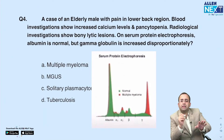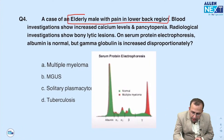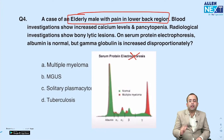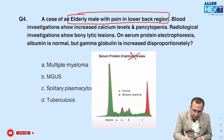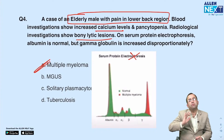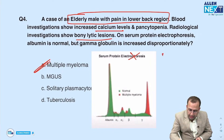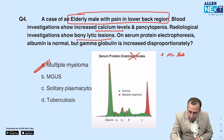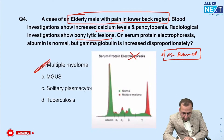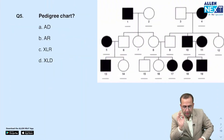Multiple myeloma: the examiner gave you an elderly male with low back pain. Even without reading the protein electrophoresis, the features are clear — calcium increased, bony lytic lesions, CRAB features present — diagnosis is multiple myeloma. On protein electrophoresis, it shows the presence of the M band — the monoclonal band seen in multiple myeloma.